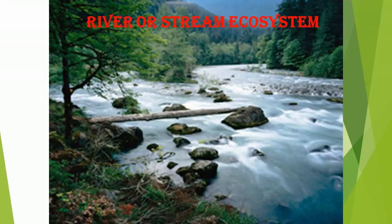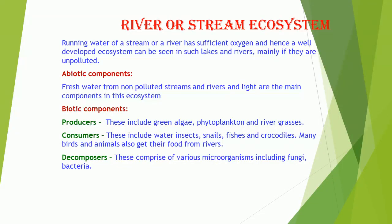River or Stream Ecosystem. Running water of a stream or river has sufficient oxygen, and hence a well-developed ecosystem can be seen in such rivers, mainly if they are unpolluted. Abiotic Components: Fresh water from non-polluted streams and rivers and light are the main components. Biotic Components — Producers: These include green algae, phytoplankton, and river grasses. Consumers: These include water insects, snails, fishes, and crocodiles. Many birds and animals also get their food from rivers. Decomposers comprise various microorganisms including fungi and bacteria.